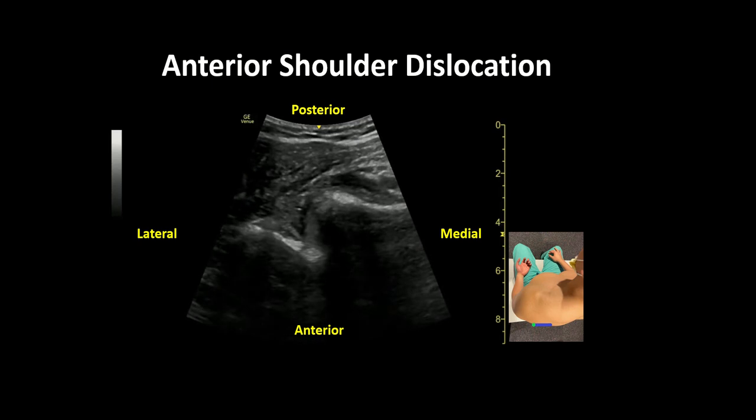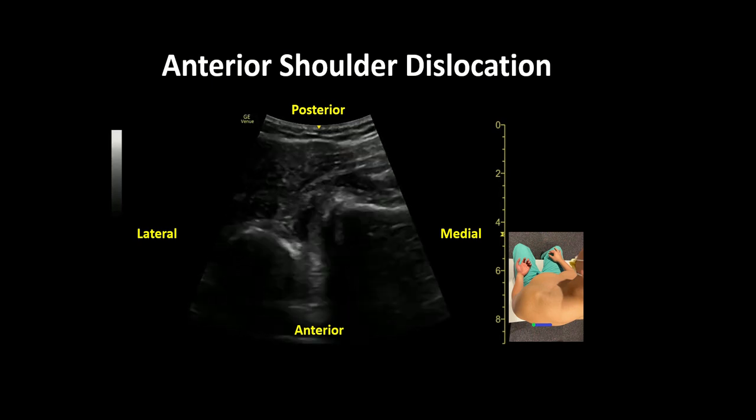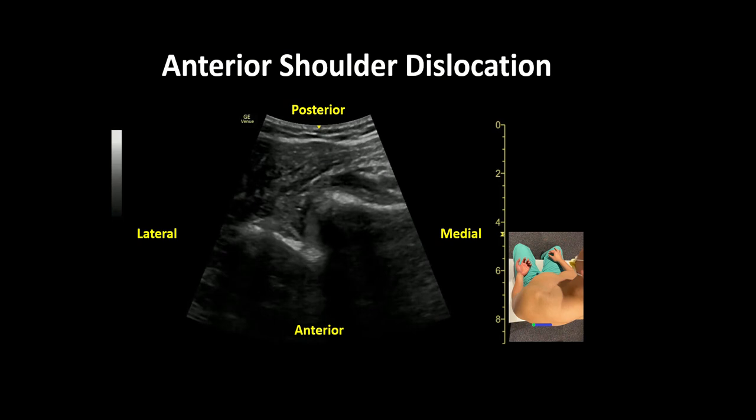This is an ultrasound clip demonstrating an anterior shoulder dislocation in a patient presenting to the emergency room with shoulder pain after a fall.